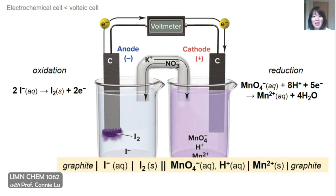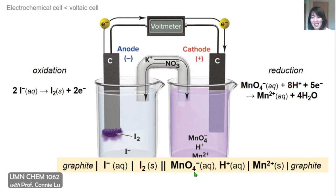The cell notation becomes slightly more complicated because we have to indicate the presence of these inactive electrodes. Like before, we have double lines in the middle representing the salt bridge that separates the oxidation reaction from the reduction. In the oxidation reaction, we begin by listing graphite, the inactive electrode, then separated by a line to the reactant and the product, I- and I2. On the right side, we list the reactants permanganate and also the presence of protons, then the product separated by a line — manganese 2 plus — and then a line that separates the inactive electrode graphite.